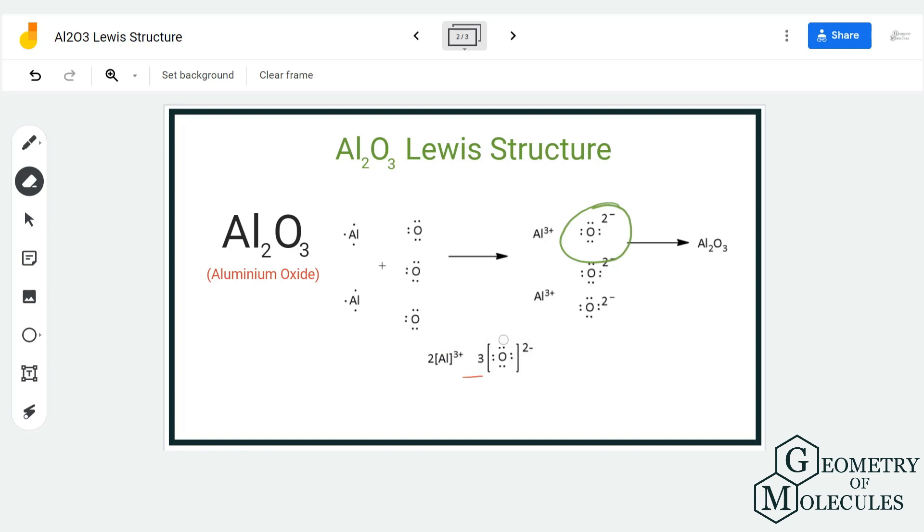Now if you look at the net charge or the complete charges on this compound, it will be zero because two into plus three is plus six, and three into minus two is minus six. So the net charge on this compound is zero.